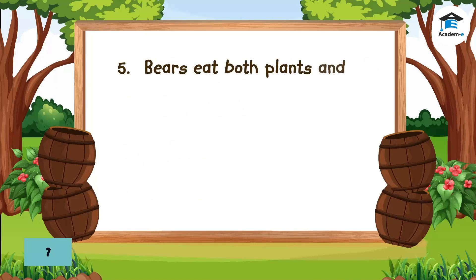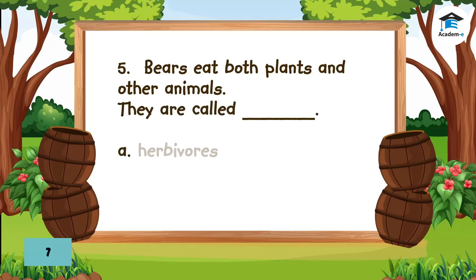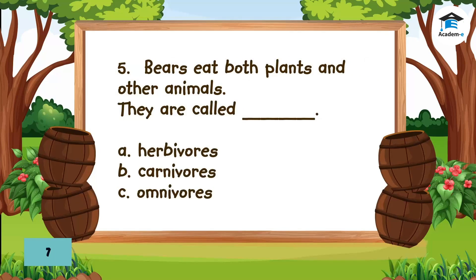Question 5: Bears eat both plants and other animals. They are called — A. Herbivores. B. Carnivores. C. Omnivores. The answer is C. Omnivores.